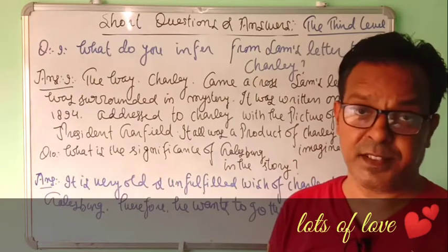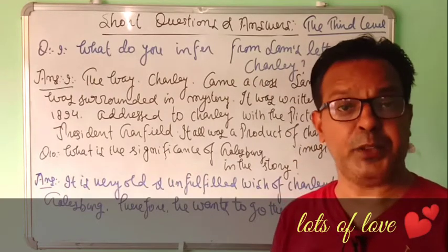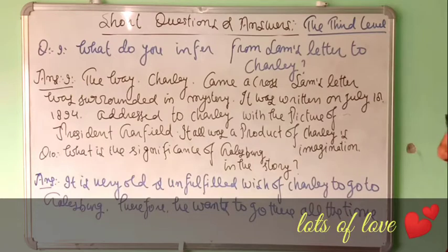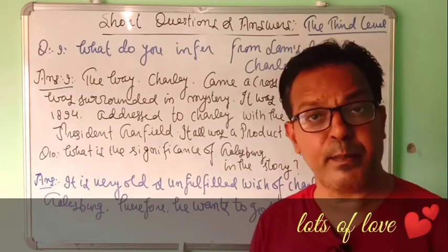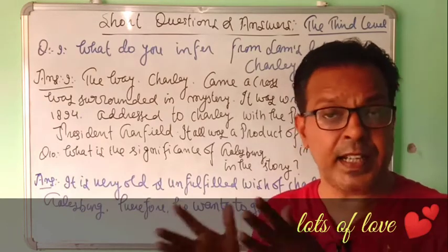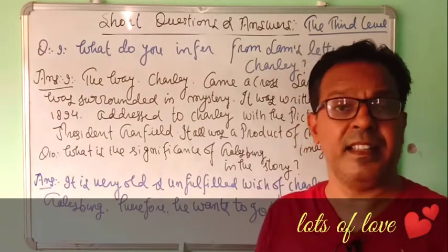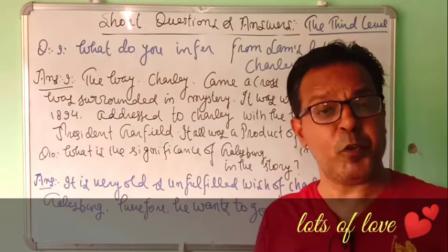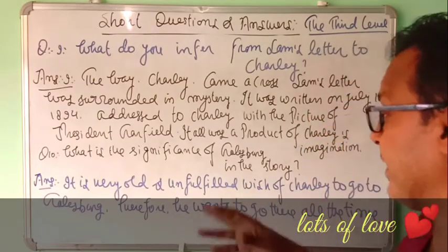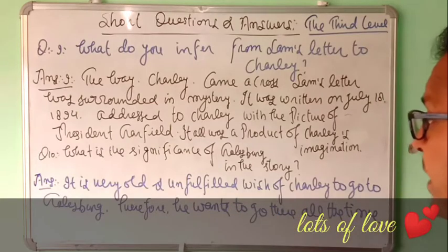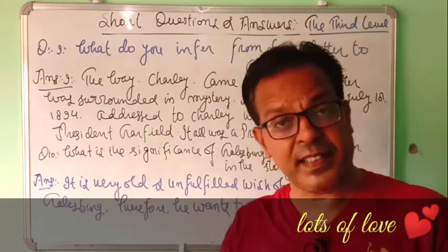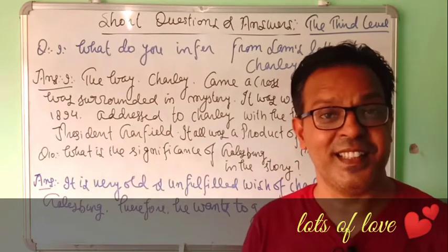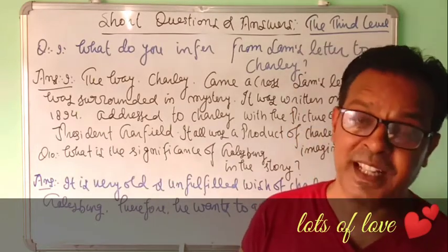Question Number Ten: why is Galsworth mentioned again and again in this story? It is a very old and unfulfilled wish of Charlie to go to Galsworth. From the beginning, Charlie has a dream of going there. The reason is clear — today's life is hectic, tiring, crowded. He dreams of a time a hundred years ago when life was simpler and there was more peace. Therefore he wants to go there all the time and keeps weaving stories about it.